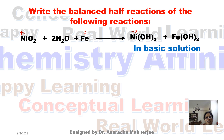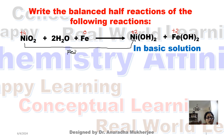In ferrous hydroxide, iron will be plus 2. So here we can see that for nickel oxide, nickel goes from plus 4 to plus 2 — this is a reduction, so this is one half-reaction. And iron goes from 0 to plus 2 — this is one half-reaction which is oxidation.